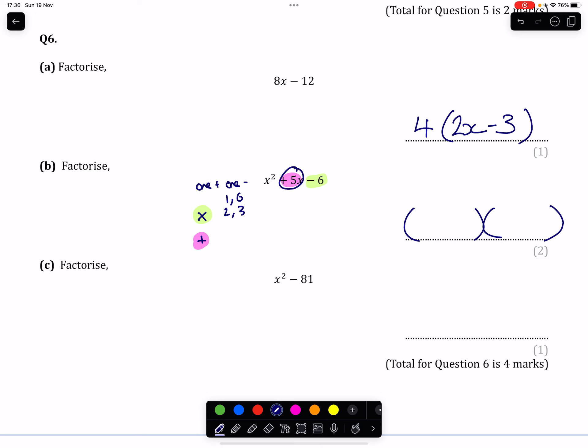And then trying to get a positive 5 from that will result in a plus 6 and a minus 1. So plus 6 and minus 1 are going to be our two numbers that go inside the brackets, with x times x at the start being where we get x squared from.